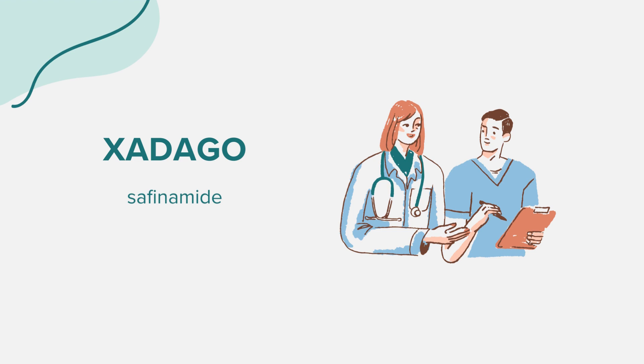Xadago is administered alongside levodopa and carbidopa to manage wearing-off episodes in Parkinson's patients, which can manifest as muscle stiffness or loss of muscle control.